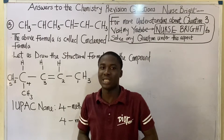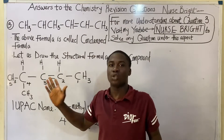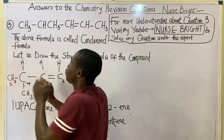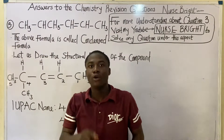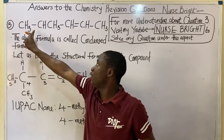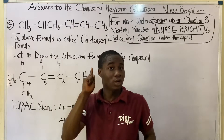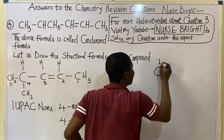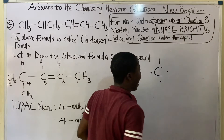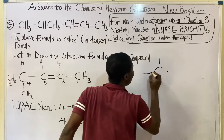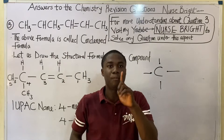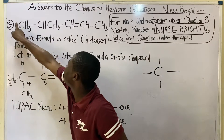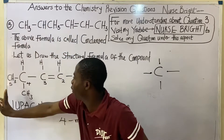When we change this condensed formula to a structural formula, we start like this. Pay attention: we already know that the maximum number of bonds that can surround a carbon atom is four — that is, carbon can connect with a maximum of four other atoms. Keep this in mind as we proceed.